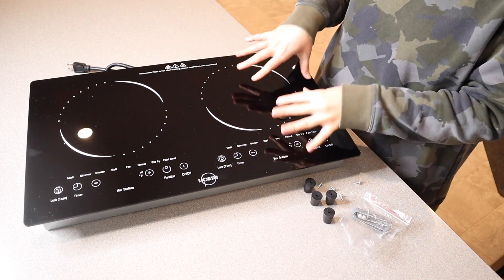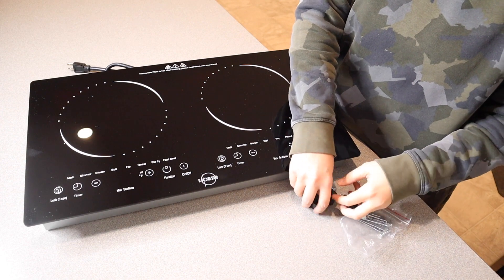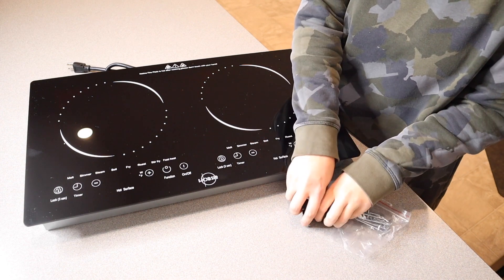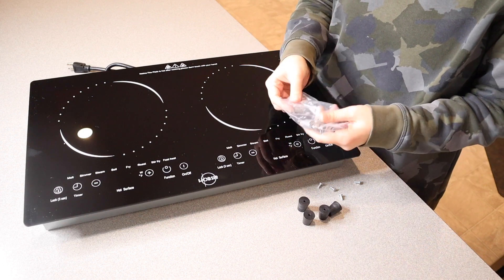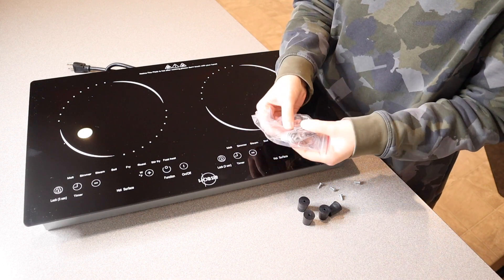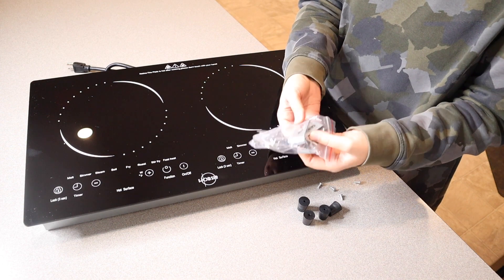We have the actual two-burner cooktop itself and we also have four of these little feet that you can install if you are using this just on the countertop. And if you're actually wanting to install this down into the counter, it comes with a little hardware that you're going to need to do that as well.